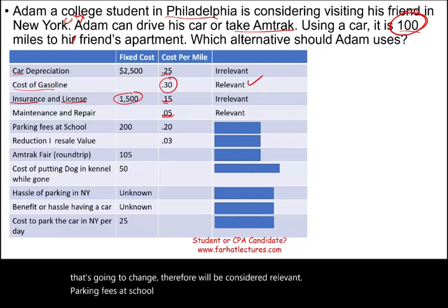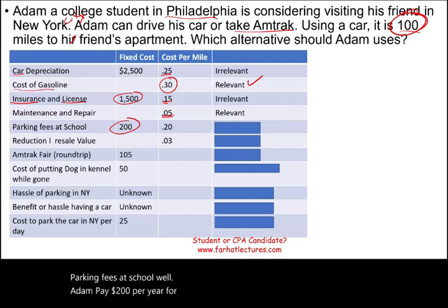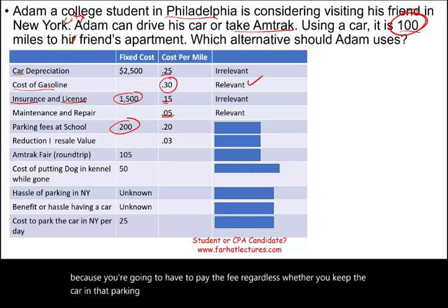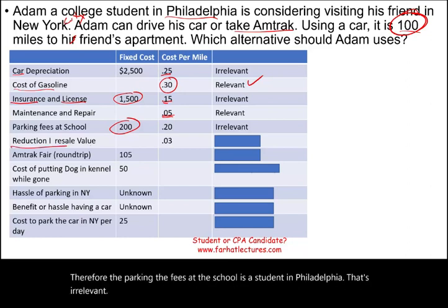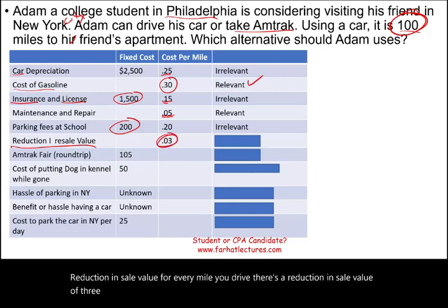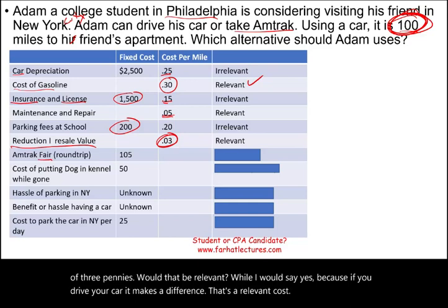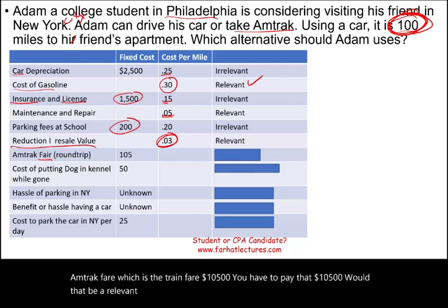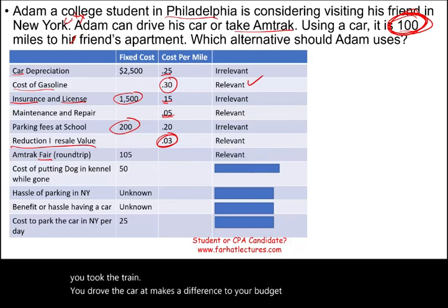Adam pays $200 per year for parking his car at school in Philadelphia. Whether he drives to New York or takes the train, he still pays that fee — so it's irrelevant. Reduction in sale value is 3 cents per mile: if you drive the car, it makes a difference, so that's relevant. The Amtrak fare is $105 — definitely relevant, because it differs depending on whether you take the train or drive.